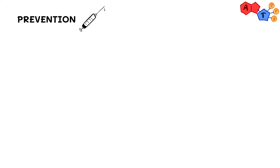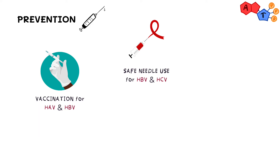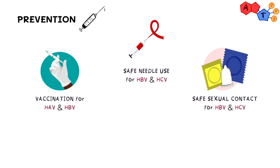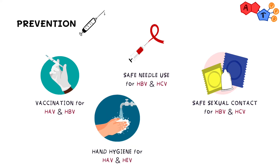Regarding prevention, hepatitis A and hepatitis B have vaccines. General prevention measures include: for hepatitis B and C, safe needle use should be taught and encouraged — needles should not be shared by IV drug users. Safe sexual contact should be exercised to reduce transmission risk. For hepatitis A and E, hand hygiene and water sanitation are important.